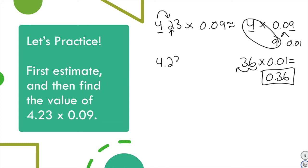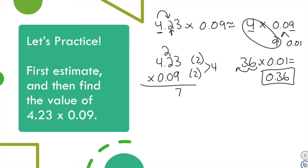So what is 4 and 23 hundredths times 9 hundredths? We have two decimal places in the first factor and two in the second — four total — so we put the decimal point four places to the left in our answer. Solving: 9 times 3 is 27. 9 times 2 is 18, plus 2 is 20. 9 times 4 is 36, plus 2 is 38. Counting four decimal places gives us 3,807 ten-thousandths.